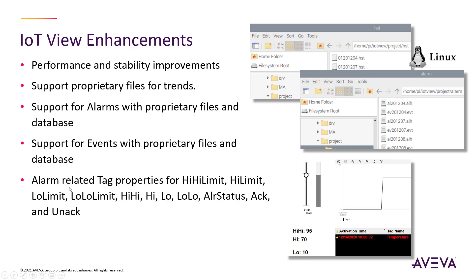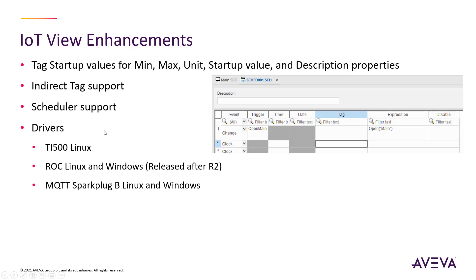We've also added some additional tag properties to IoT View. These were previously available only in Windows, and now you have tag properties for the alarm limits. Some of these are read and write, so you can change those limits on those tags during runtime, as well as get at status for acknowledged and unacknowledged. You can now set the startup tag values for the min, the max, the startup values, description properties, as well as indirect tag support throughout the IoT View runtime.